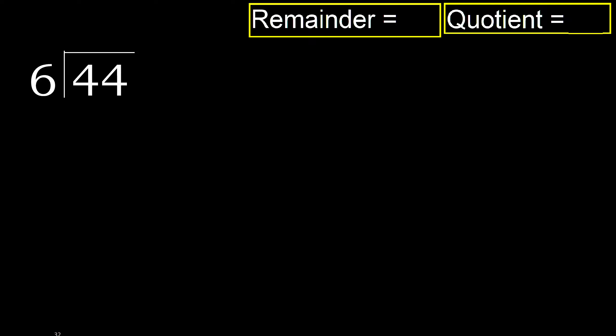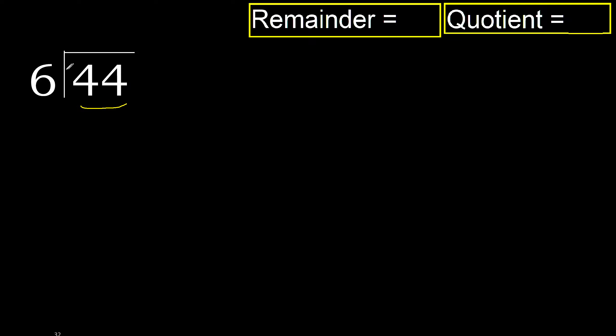44 divided by 6. 4 is less than 6, therefore move to the next digit. 44 is not less than 6, so find the number which, when multiplied by 6, gives the nearest value to 44 but not greater.